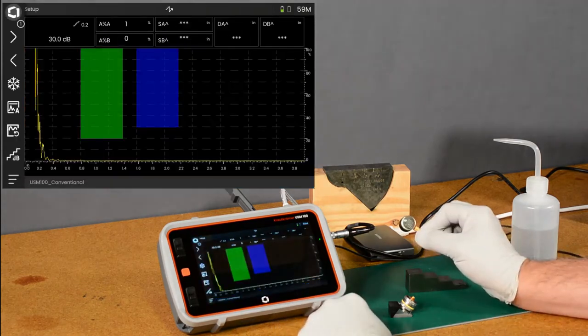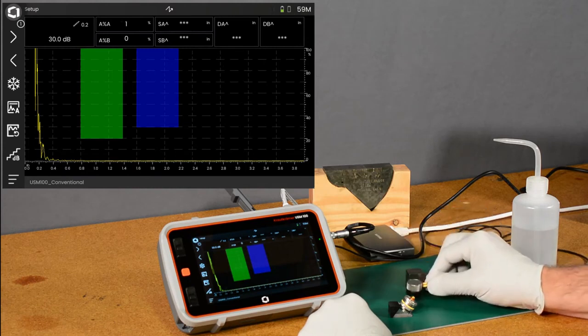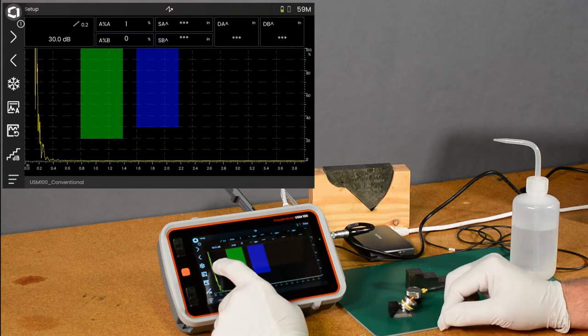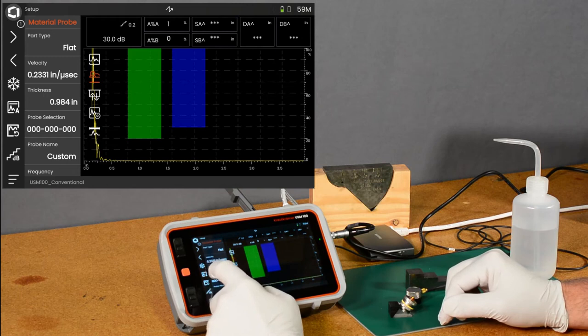I've selected a 5 megahertz gamma probe, so there's not a lot to change about the probe setup on this. The default value is already 5 megahertz, but we can come in here and look at the probe setup.